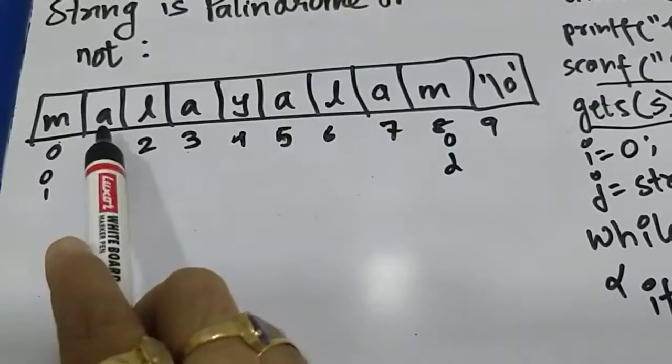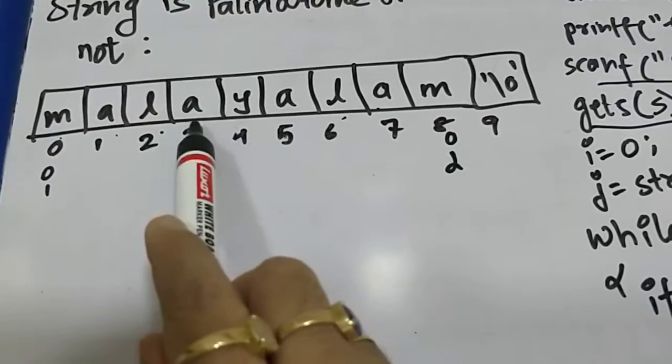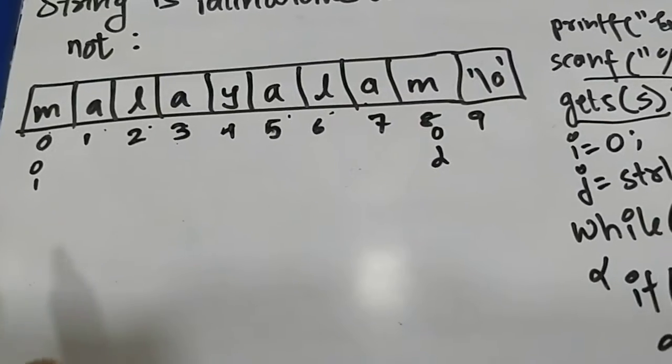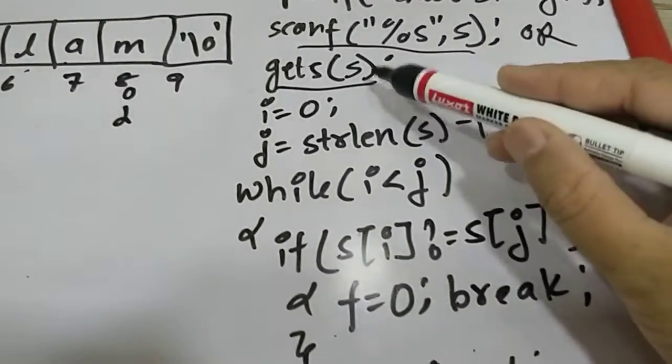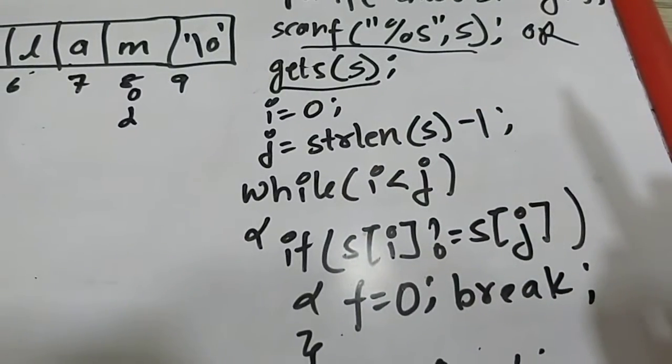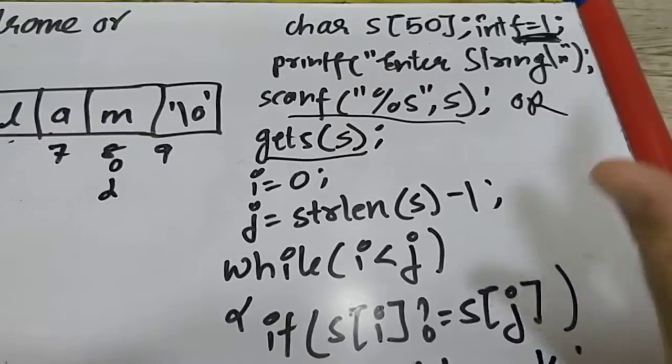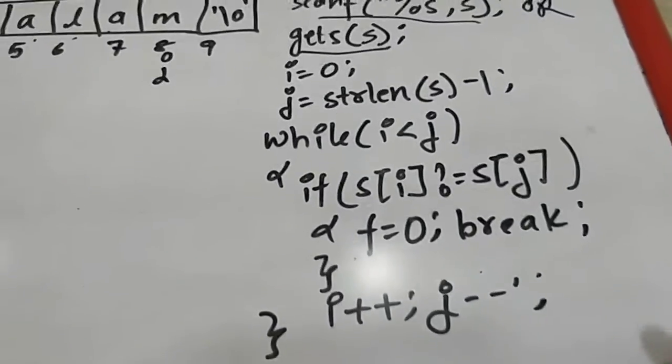Second and second last will match, third and third last will match, fourth and fourth last will match. Now what do you mean by that? See, have a look. i is zero, j is length minus one, and my flag is set to one with this assumption that my string will be palindrome. Now we are looking for a position where i will not be equal to j.